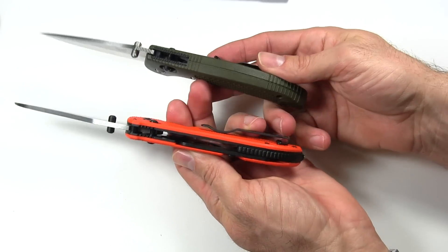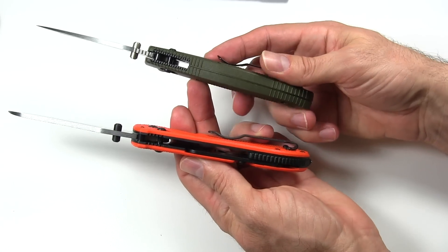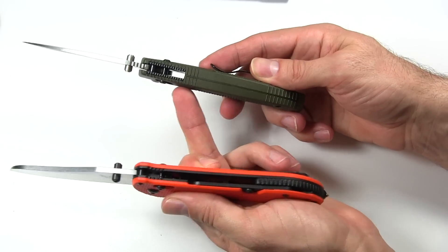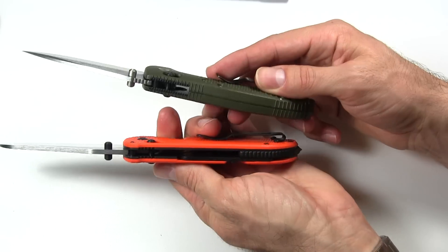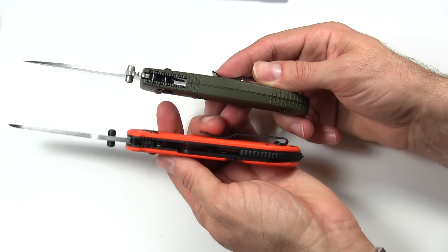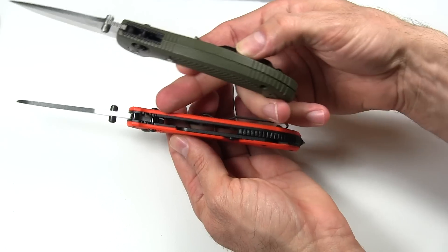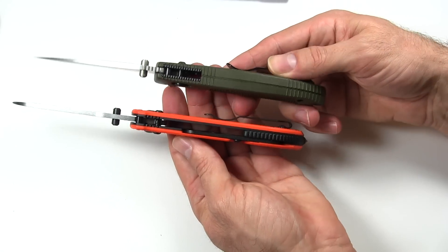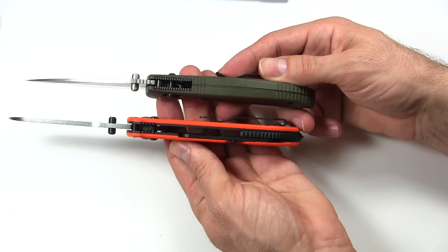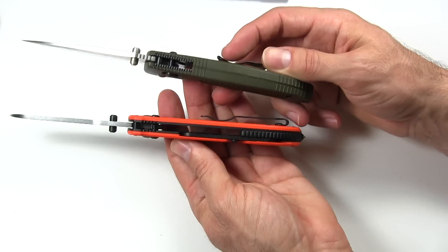Handle thickness. The Griptilian is actually bigger, despite it being a lighter knife. I think because the Griptilian actually kind of curves out a little bit here on each side. So the Griptilian comes in at 0.64 inches, whereas the Triage, which is just straight up and down, 0.53 inches.